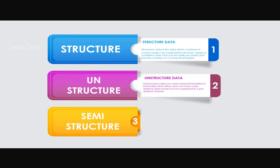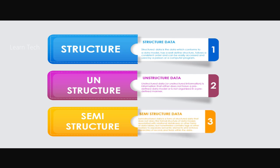This is Unstructured Data — it has no defined structure. Examples include image files, video files, etc. And Semi-Structured Data is a mix. Examples include email, email contents, text files, and log files.